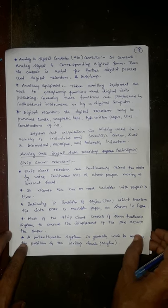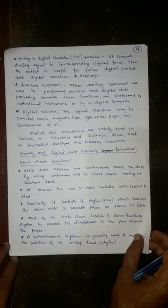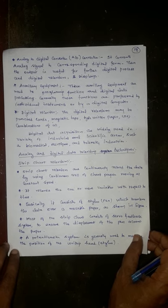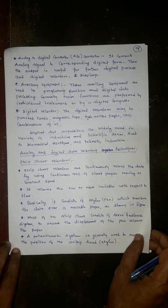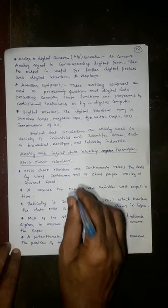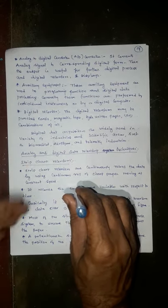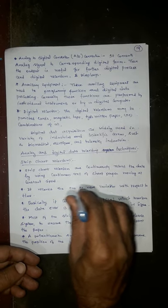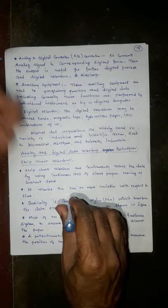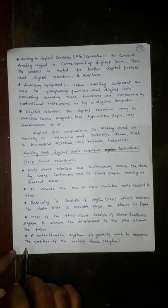Most of the strip chart consists of servo feedback system to ensure the displacement of the pen across the paper. This is the paper. The pen will be here. Then the paper will roll under the pen and simply the pen will move like this. The paper will move. This is the strip chart recorder.